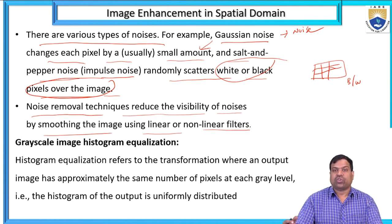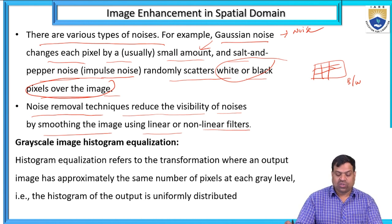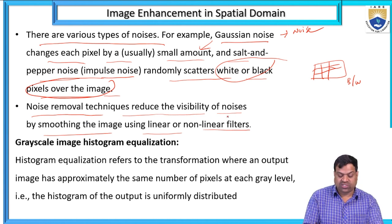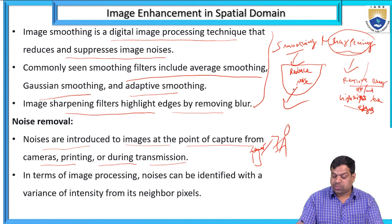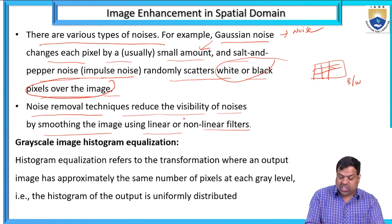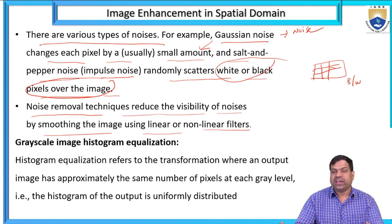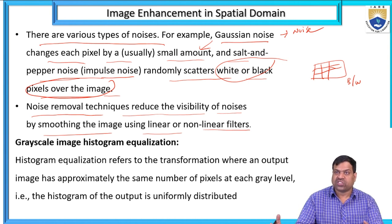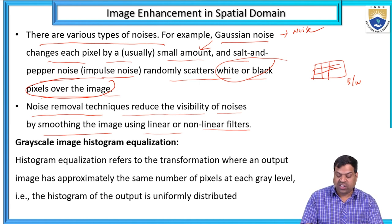Depending on the type of noise, we have to use the appropriate filter. We must first recognize what type of noise is present, then choose a suitable filter. Filters are two types: linear and nonlinear. Where to use linear or nonlinear depends on the type and percentage of noise present.